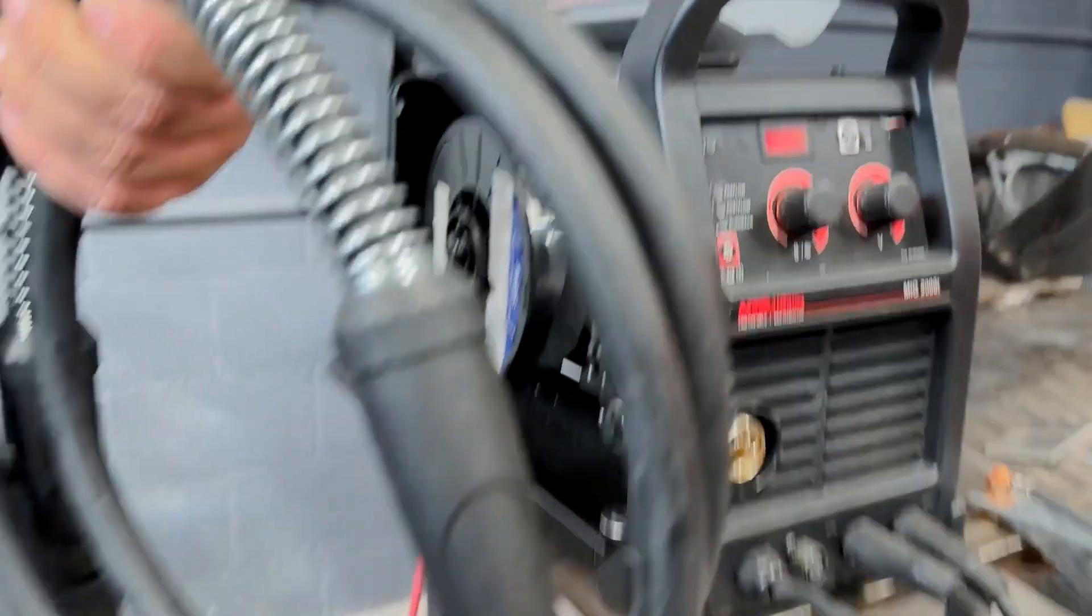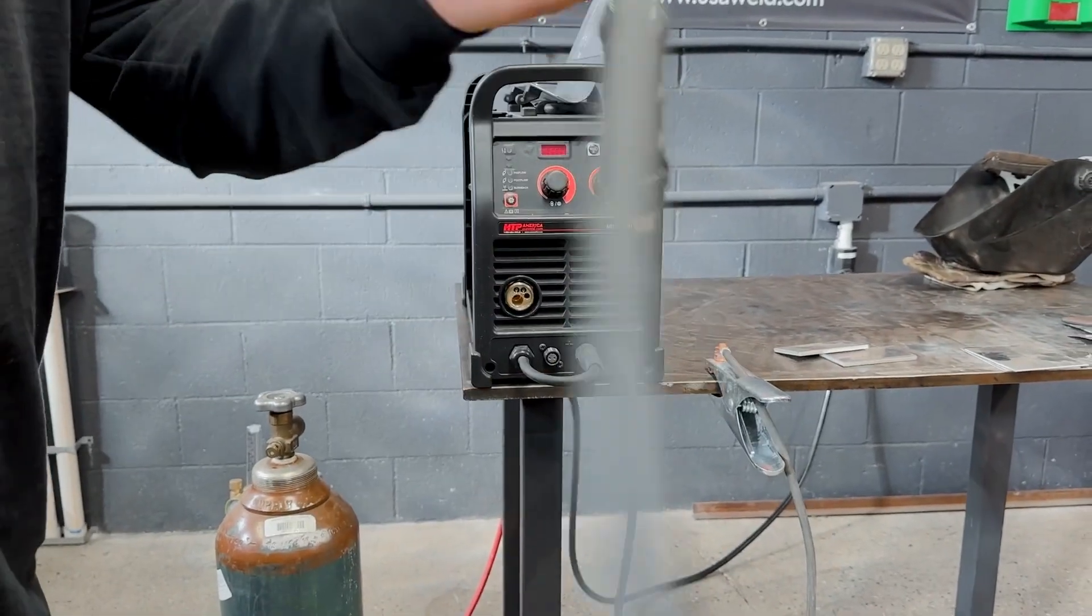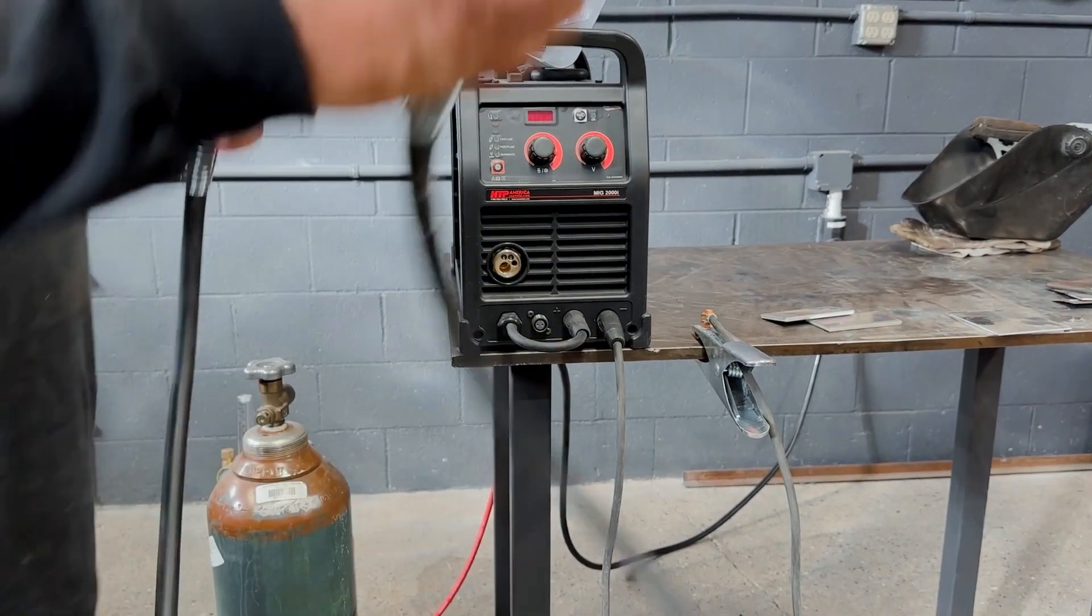Then you install your aluminum gun with your aluminum liner or carbon graphite liner, meant for aluminum.